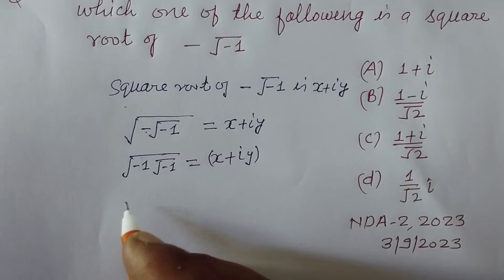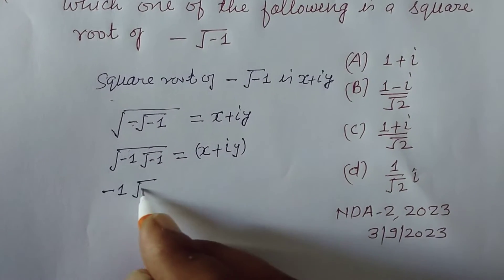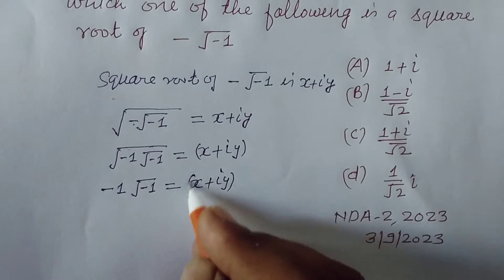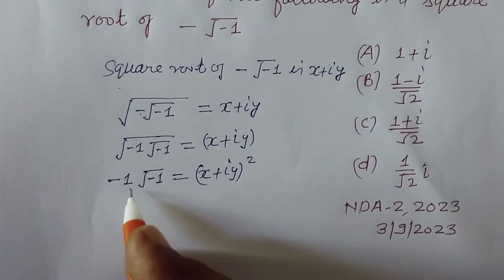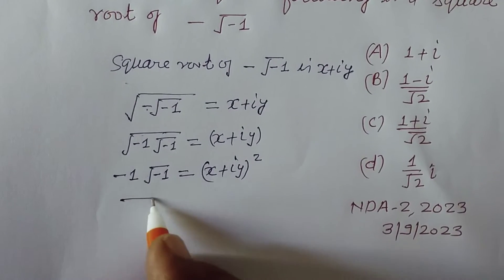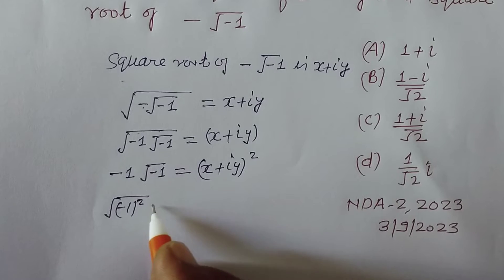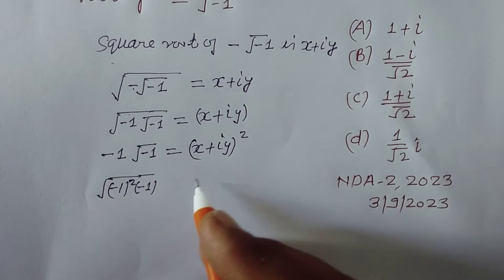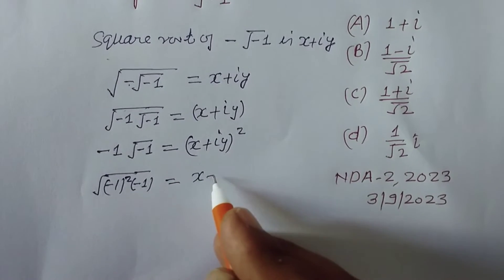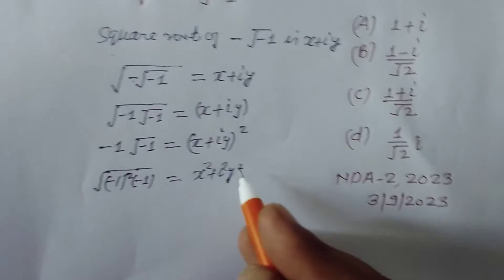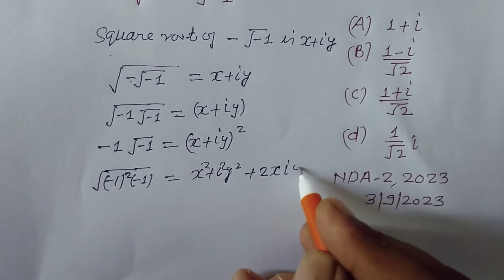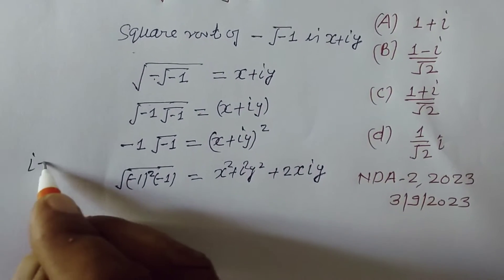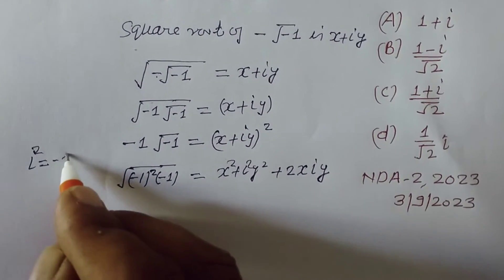Now squaring both sides, we get −1 · √(−1) = (x + iy)². Expanding the right side gives x² + (iy)² + 2x·iy, and since i² = −1, we simplify accordingly.